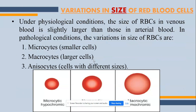Now we have come towards the end of this topic, and the last part is variation in the size of red blood cells. Under physiological conditions, the size of RBCs in venous blood is slightly larger than those in arterial blood. But under abnormal conditions, RBCs can sometimes be very small, very large, or take on an abnormal shape — for example, a dumbbell shape instead of the normal biconcave shape.